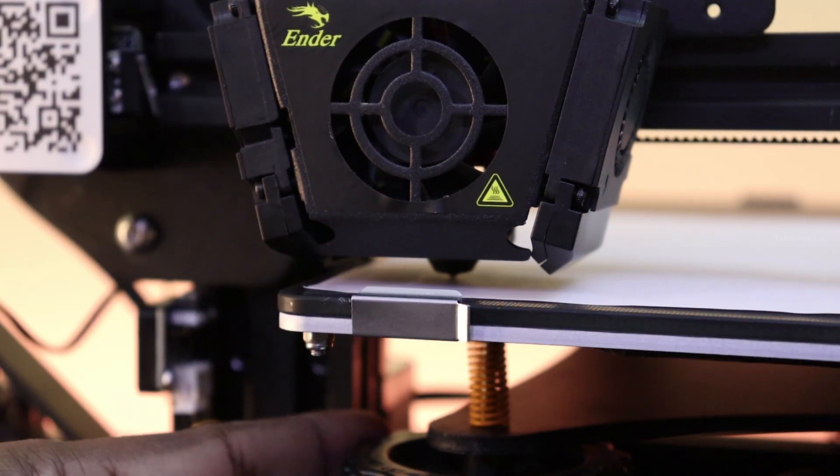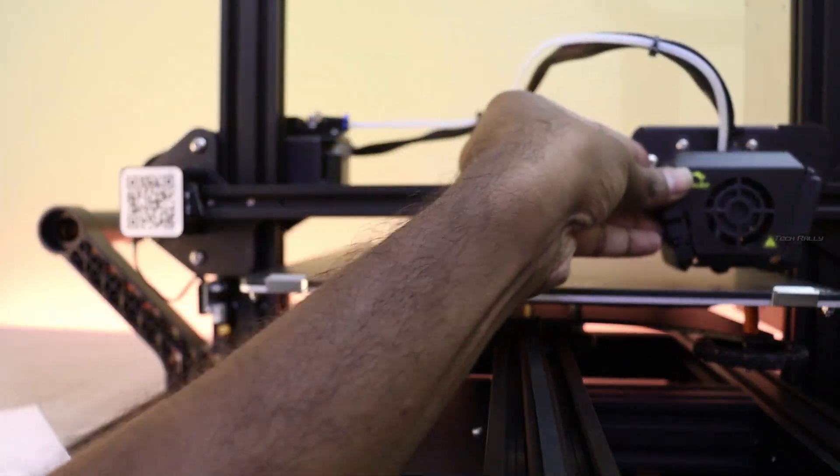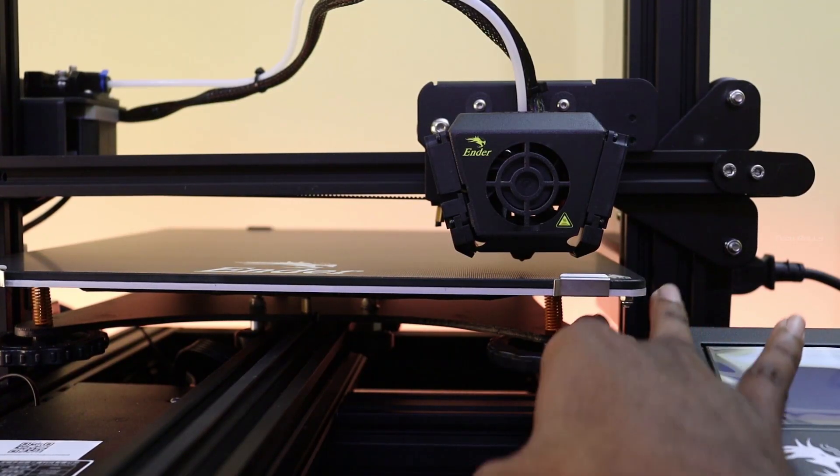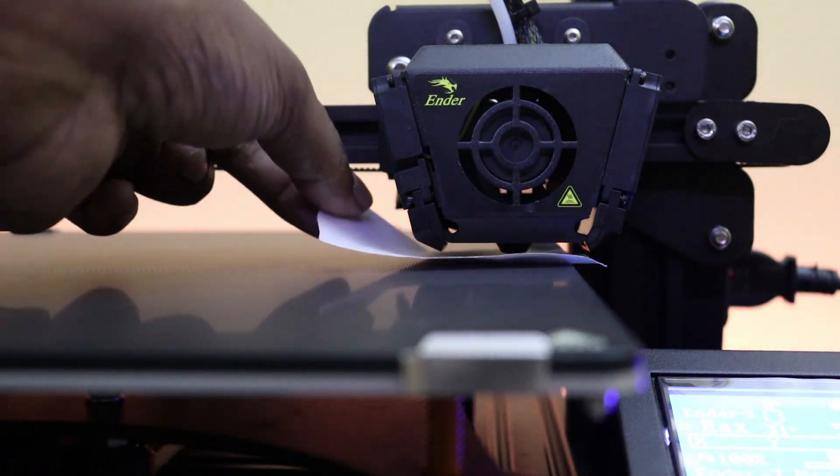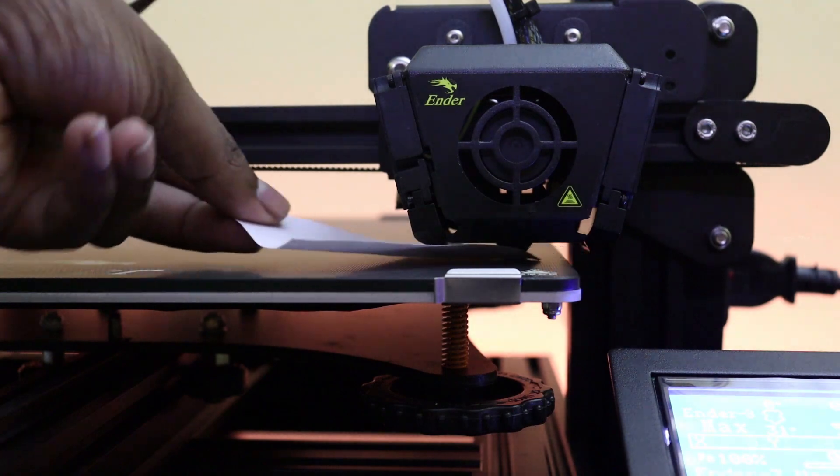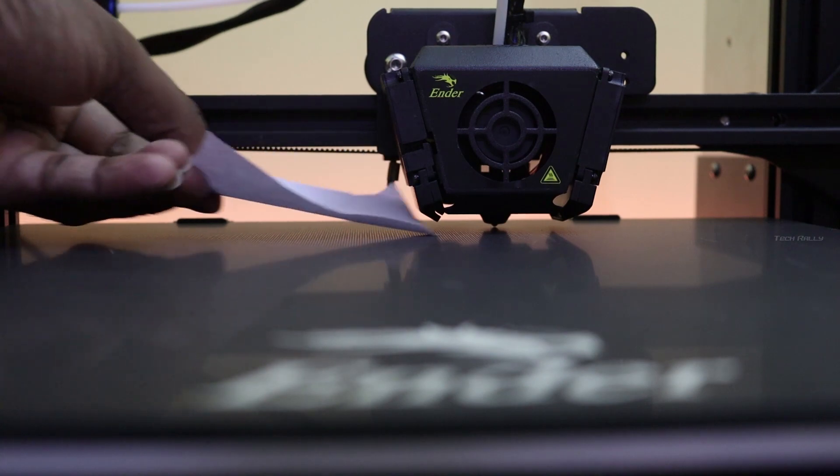Now level the bed at four corners by rotating the knobs under the build plate. I used an A4 sheet for bed leveling. The paper should not move too freely or too tight. It should touch the nozzle and move with slight tension, and repeat it for all four corners and middle until you get each level on all sides.